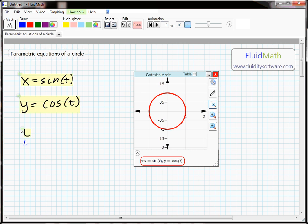Next, we'll set the value of t to be one and we'll plot the point x, y on the graph.